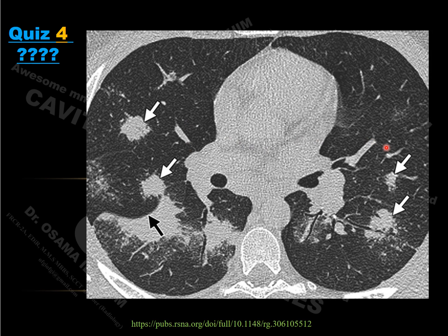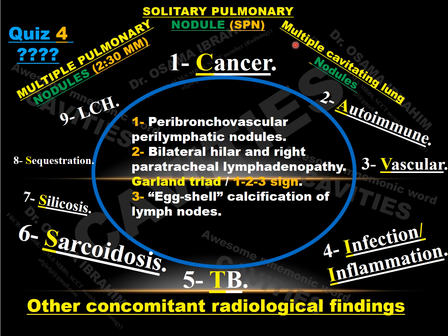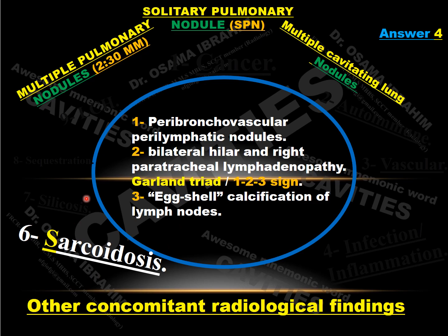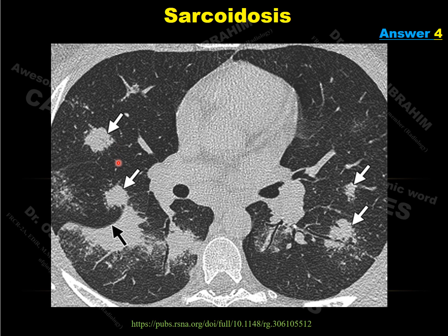Case 4: Chest CT lung window shows multiple pulmonary nodules in both lung fields with distribution in a peribronchovascular pattern, small-sized nodules including some cavitating, and hilar lymphadenopathy. Applying CAVITIES, if there is peribronchovascular or perilymphatic distribution, bilateral hilar and right paratracheal lymph nodes — the Pawnee-Tafliad or 1-2-3 sign — and eggshell calcifications, we select sarcoidosis. This was a case of sarcoidosis presenting with multiple pulmonary nodules, peribronchovascular distribution, and hilar lymphadenopathy.